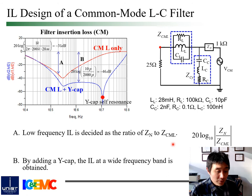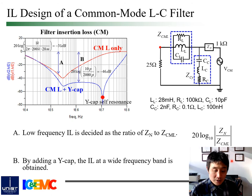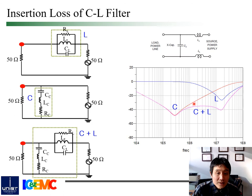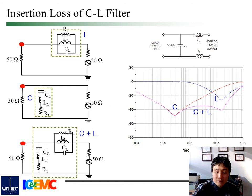On top of the existing CM choke, a Y capacitor is added based on the target insertion loss at wide frequency bands. The insertion loss at wide frequency bands due to Y capacitor is decided by the ratio of Y capacitor to the parasitic capacitance of the CM choke. Similarly, for differential mode filtering, the shunt X capacitance provides insertion loss at low-frequency bands, and the leakage inductance of the CM choke provides insertion loss at high-frequency bands. When we utilize both C and L, insertion loss covering all CE regulation bands can be obtained.